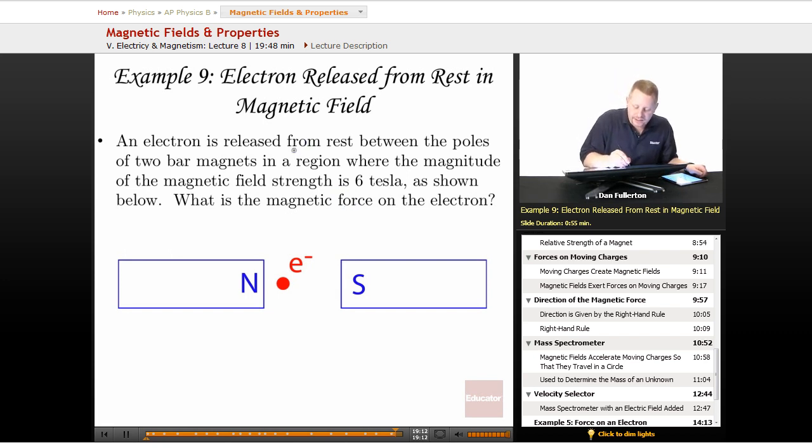Oh, here's the key. It's at rest. The magnetic force is going to be zero since V equals zero. Remember FB equals QVB sine theta. You only have that force on a moving charge.